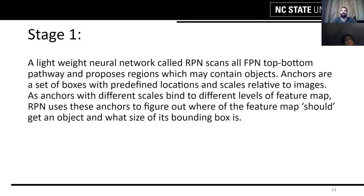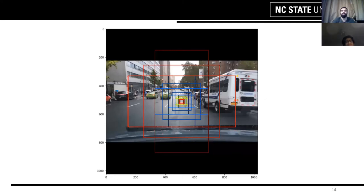In Stage 1, the RPN scans all FPN top-down pathway levels and proposes regions which may contain objects. It uses anchors which at different scales bind to different features of the map. The RPN uses these anchors to figure out which feature map should contain an object and what size the bounding box should be. This image shows how the anchor box is convolved and represented in the feature pyramid network. At each level, it is reduced in size, and we also have larger anchor boxes, allowing us to detect objects at each level in the FPN.